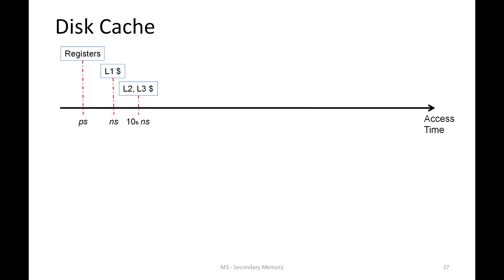Now if the data is a miss in all cache levels, we will access the DRAM, and it would require a couple of hundreds of nanoseconds for the data to reach back to the processor.